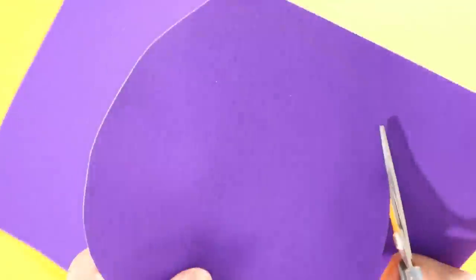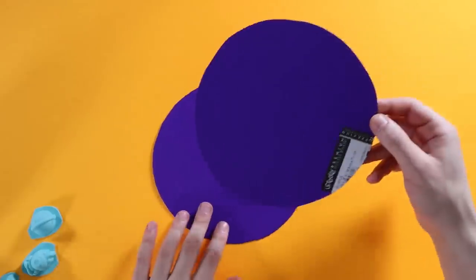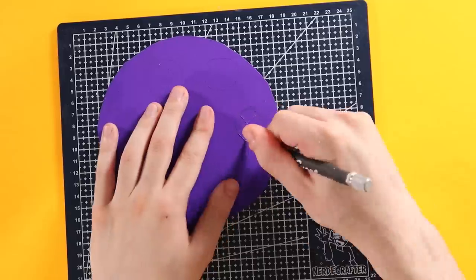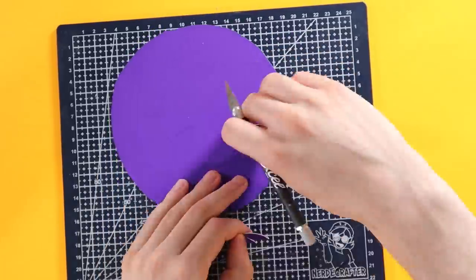I cut out a very wonky looking circle. Two of them actually. One for the front and one for the back. Same as the other two. I cut out little circles for each planet with an exacto knife. Again, I made it a really snug fit so they would really stick in there.